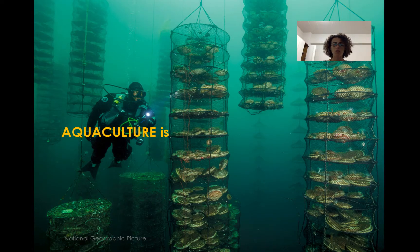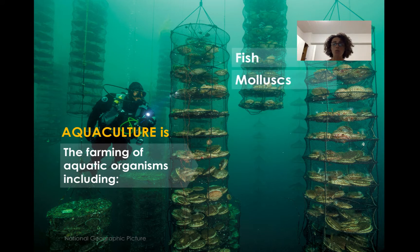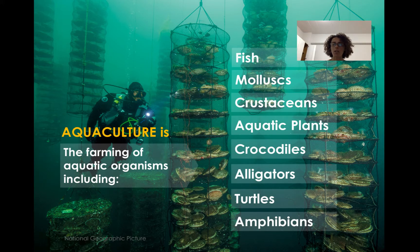Now that you've seen the six pictures, I'm going to tell you what aquaculture is according to the FAO definition. Basically, aquaculture is the farming of aquatic organisms. When you think about aquatic organisms, this includes not only fish, but also mollusks and crustaceans, aquatic plants, and yes, crocodiles and alligators are included in this, as well as turtles and amphibians.